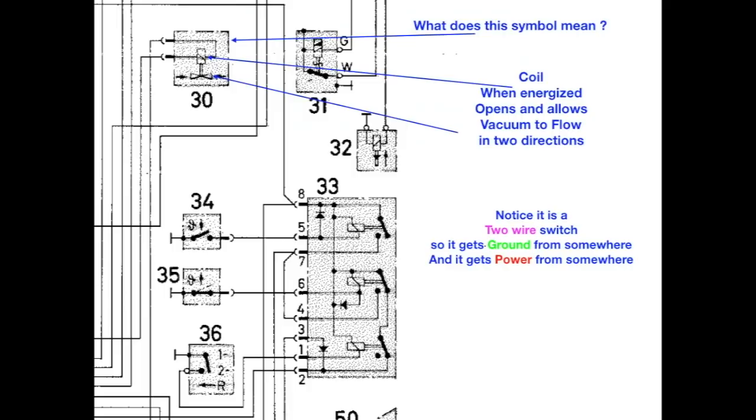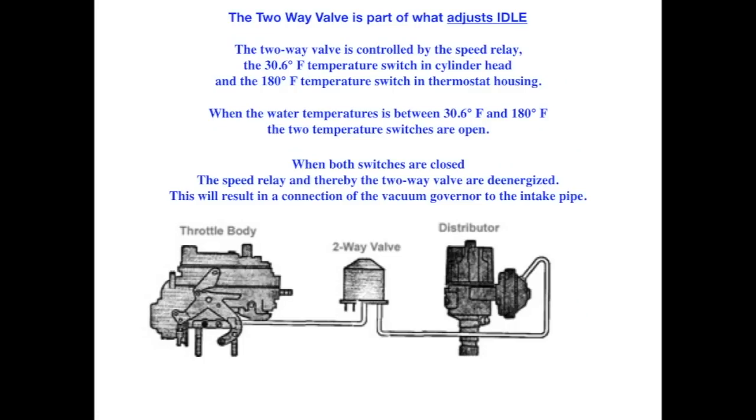The two-way valve is part of what adjusts idle. The two-way valve is controlled by the speed relay, the low temperature switch in the cylinder head, and by the high temperature switch in the thermostat housing. And when the water temperature is between low and high, the two temperature switches are open. And when both switches are closed, the speed relay, and thereby the two-way valve, is de-energized. And this will result in the connection of the vacuum governor to the intake pipe.